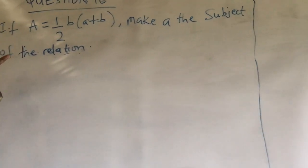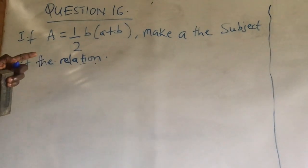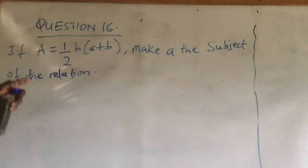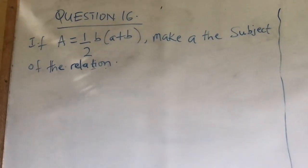This one is still under our C2022 Major Objective Question System. If A is equal to half B, bracket A plus B, make A the subject of the relation.